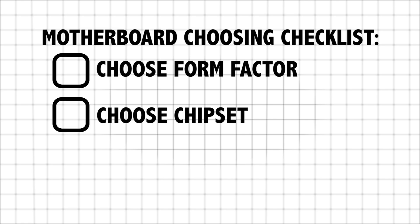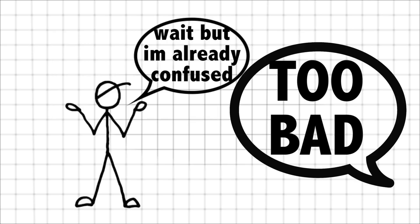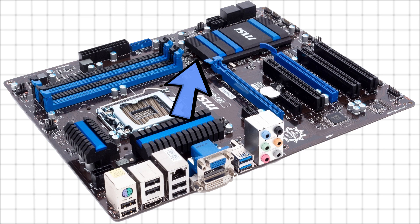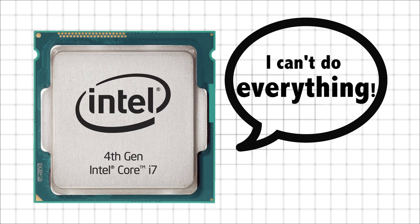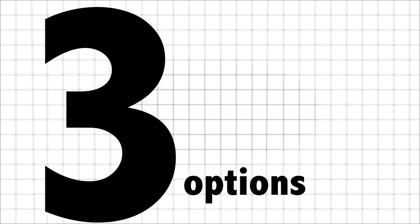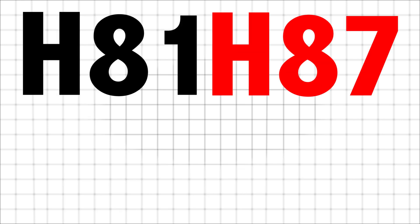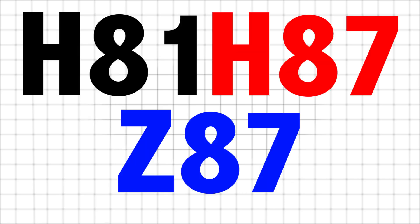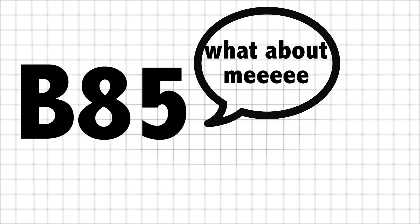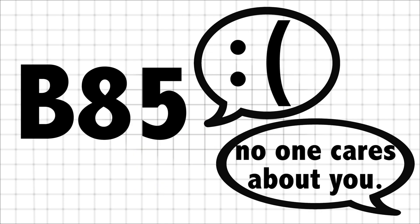Alright, so now that you have chosen your form factor, it's time for the more confusing part: choosing the chipset. The chipset of your motherboard is basically the main chip that handles whatever the processor doesn't. There are three main options for the average consumer as far as Haswell chipsets go: H81, H87, and Z87. There's also B85, but I will just be covering those three in this video.